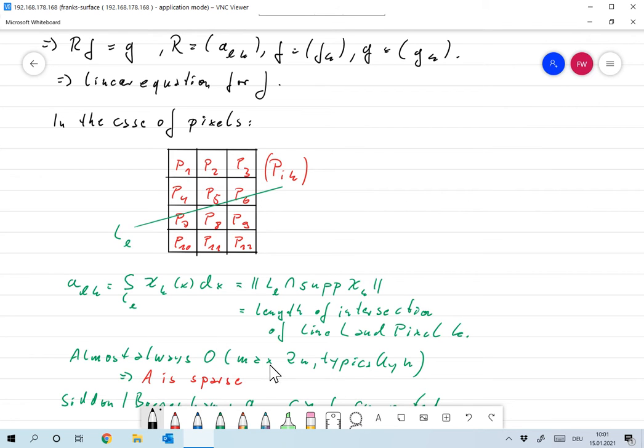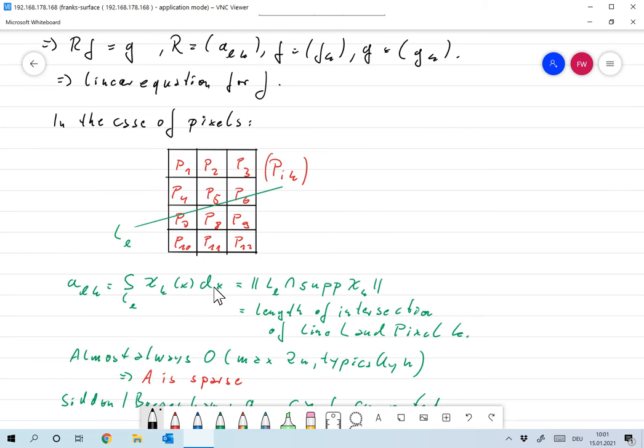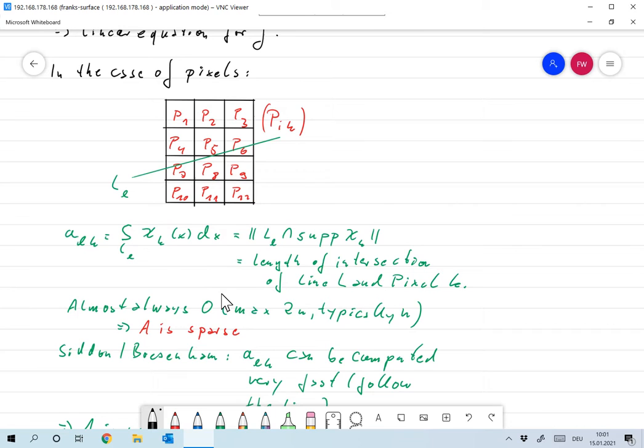What we can take from this figure is that at least if the number of pixels is large, that intersection is almost always zero, and only if the line actually hits a pixel it is non-zero. You can easily see that the maximum number of pixels that are hit by the line is something like 2n, and typically the line will hit n pixels, so it will typically have n non-zeros in every row.